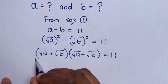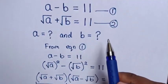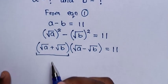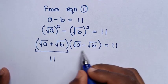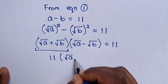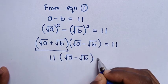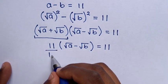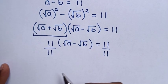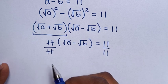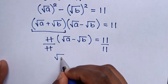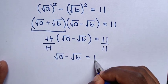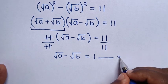From equation 2, square root of a plus square root of b equals 11. We substitute 11 for that factor, giving 11 times square root of a minus square root of b equals 11. Dividing both sides by 11, we get square root of a minus square root of b equals 1. We call this equation 3.